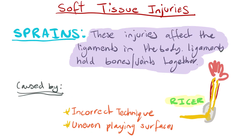The next soft tissue injury is sprains. Sprains are injuries that affect the ligaments in the body. Ligaments hold the bones and joints together. Sprains only occur to ligaments and are generally caused by incorrect technique — such as incorrect landing technique, running technique, or throwing a ball — and also uneven playing surfaces. For example, a cross-country runner might be prone to ankle sprains due to uneven running surfaces. The treatment is RISA.